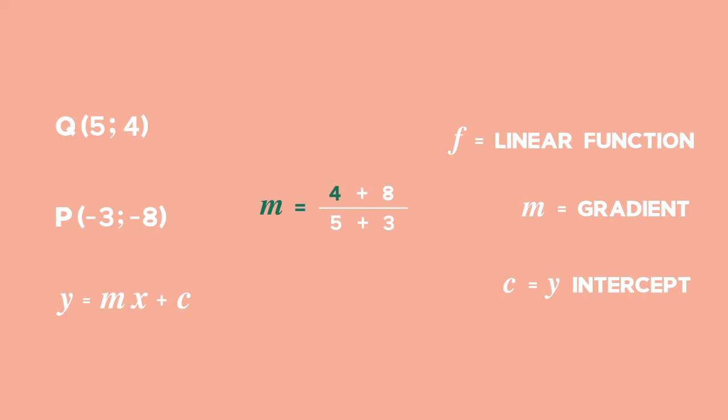m equals 4 plus 8 over 5 plus 3. This gives us a gradient of 12 over 8, which can be simplified to 3 over 4.